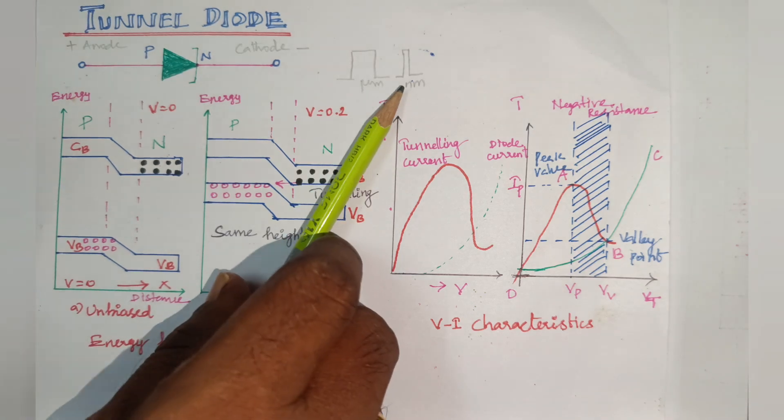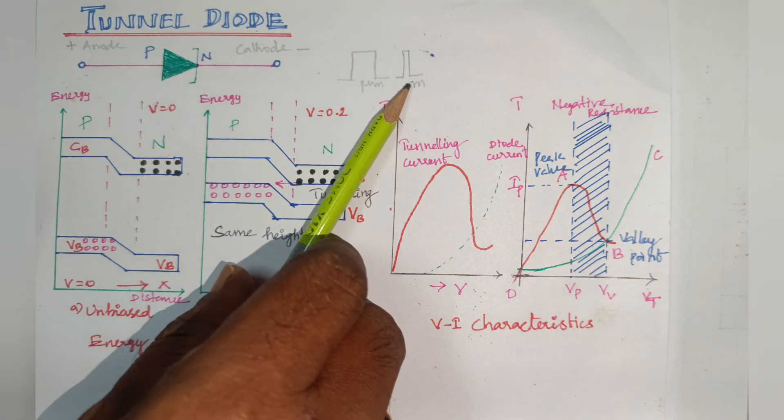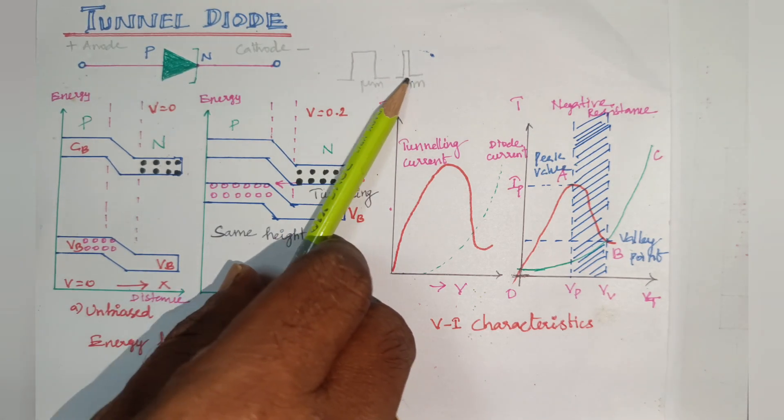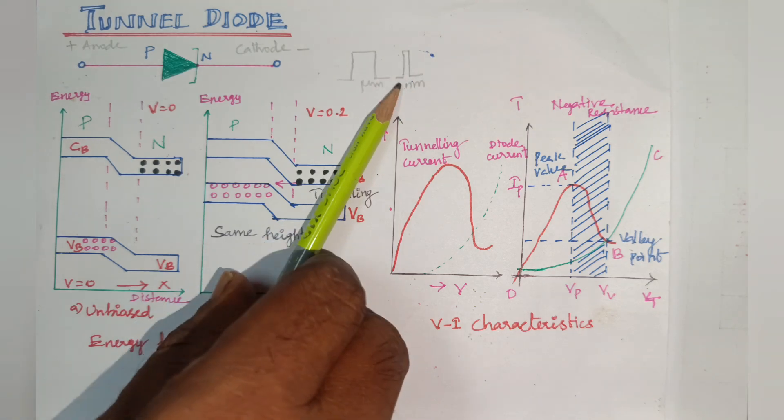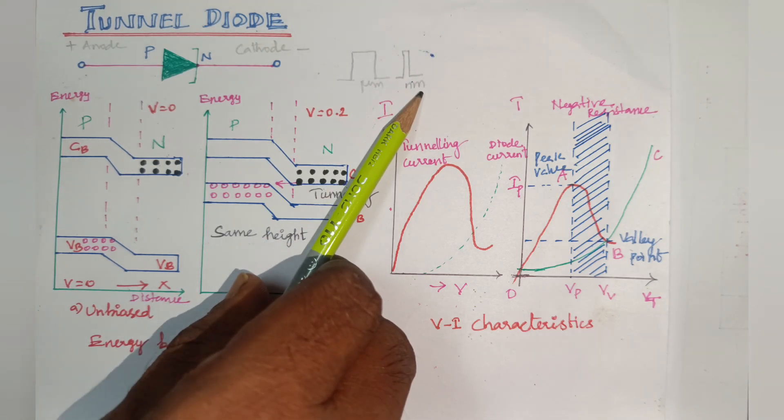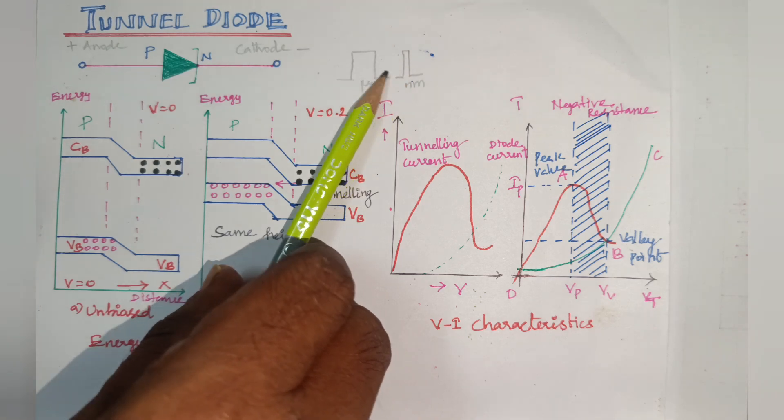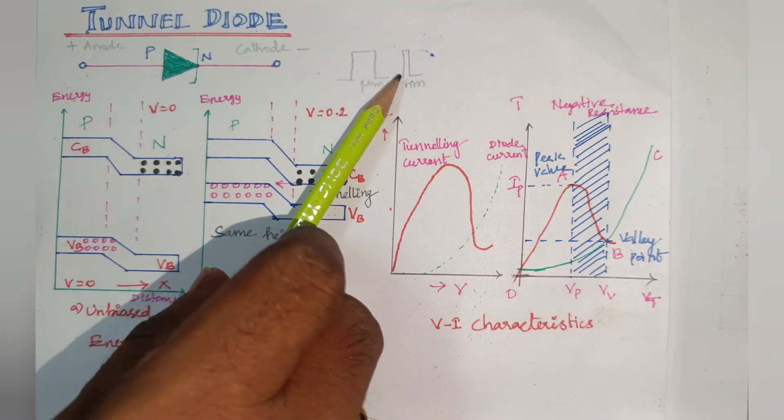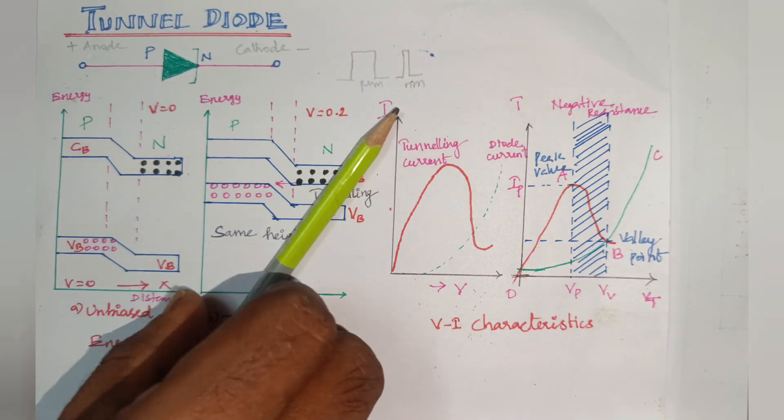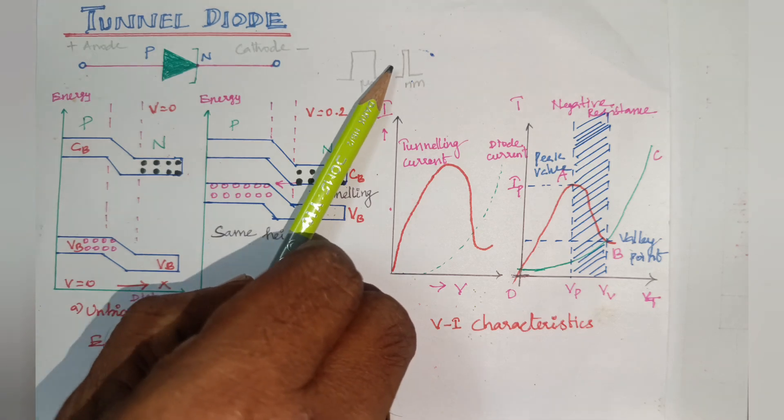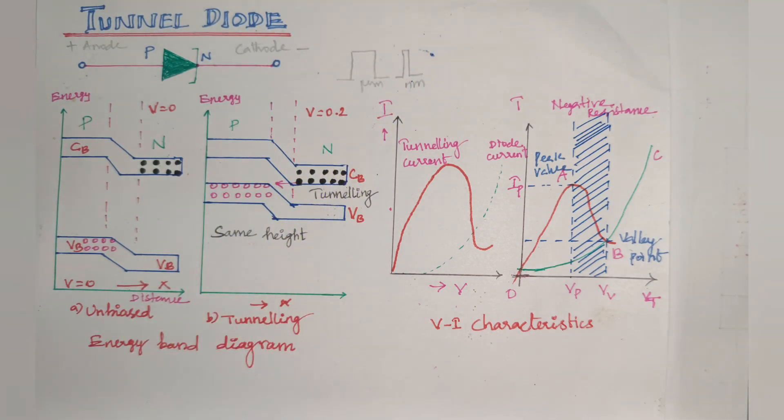At the same time, this is the tunnel diode. If you look at this barrier, it is very thin, in terms of nanometers. So electrons easily penetrate through this material. With very few voltage, it can penetrate through this material, so the switching device speed will be faster.